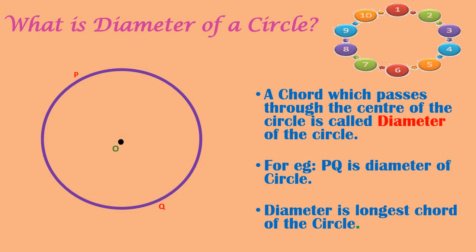What is the diameter of a circle? A chord which passes through the center of the circle is called the diameter of the circle. PQ is the diameter of the circle. Its radii are OP and OQ. The diameter is the longest chord of the circle.